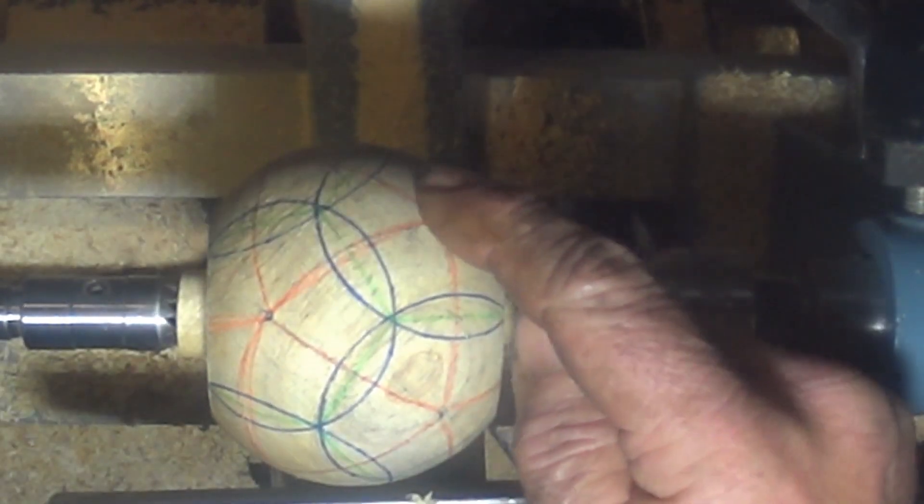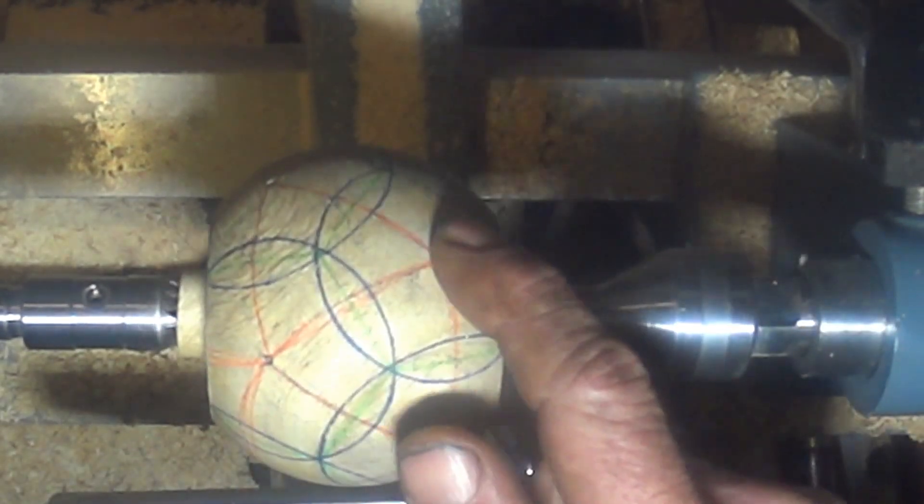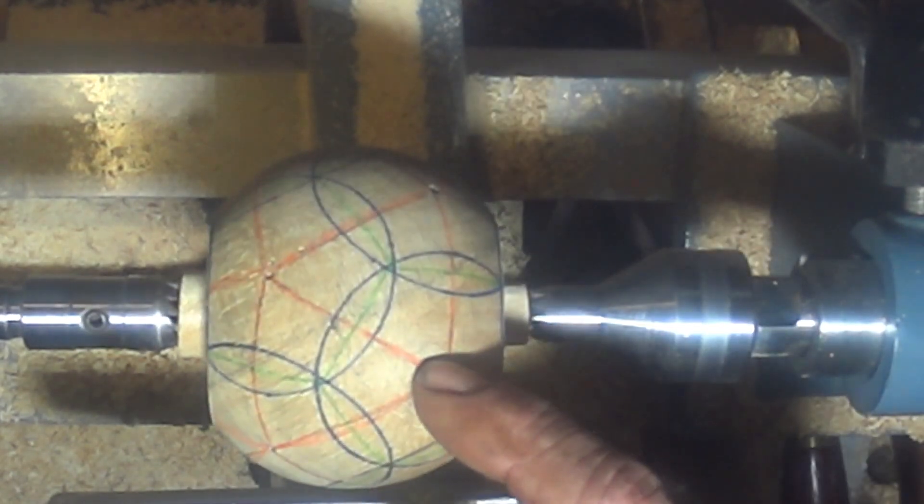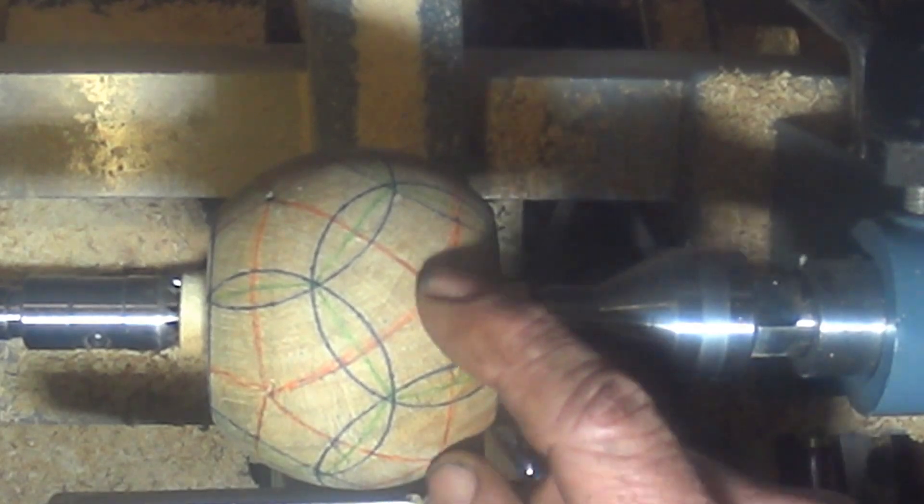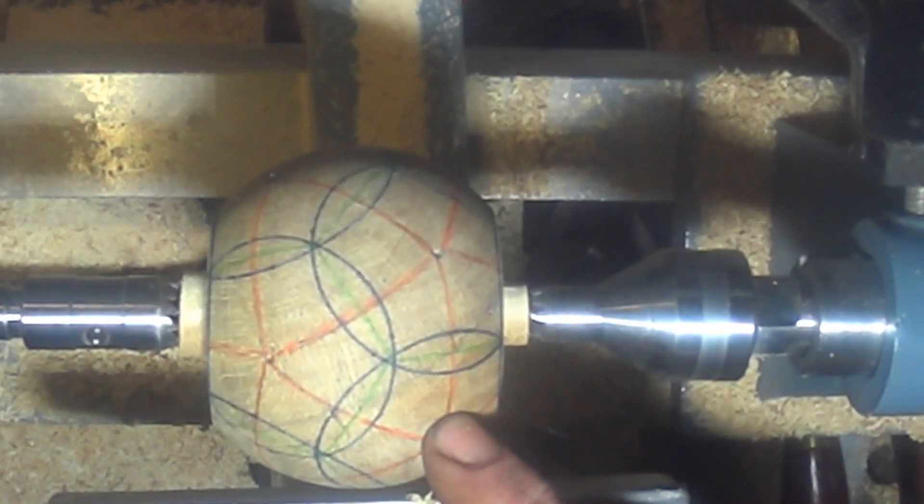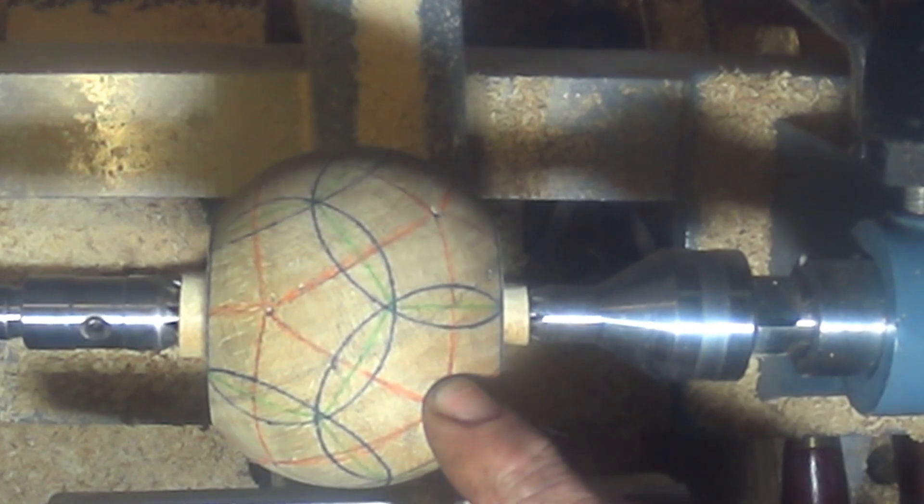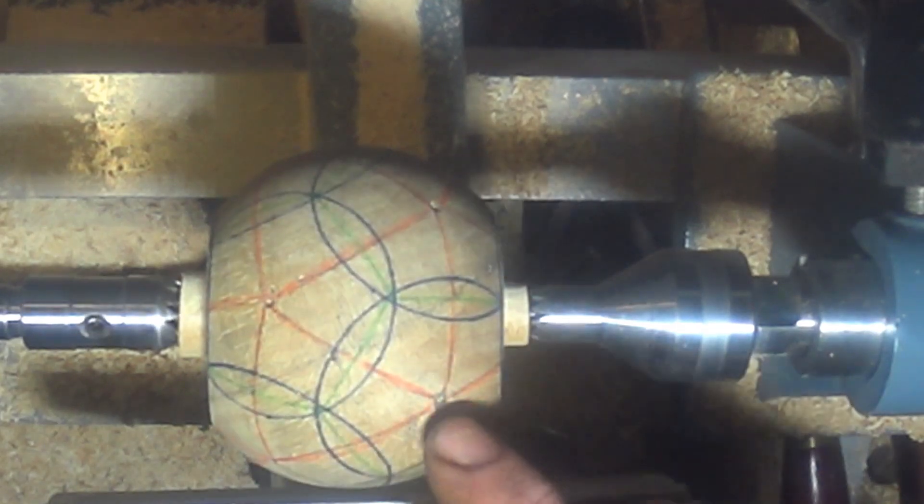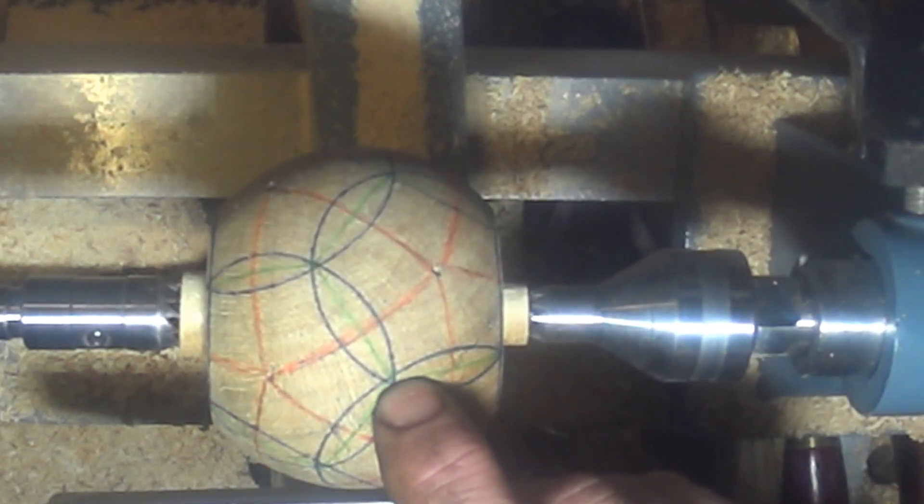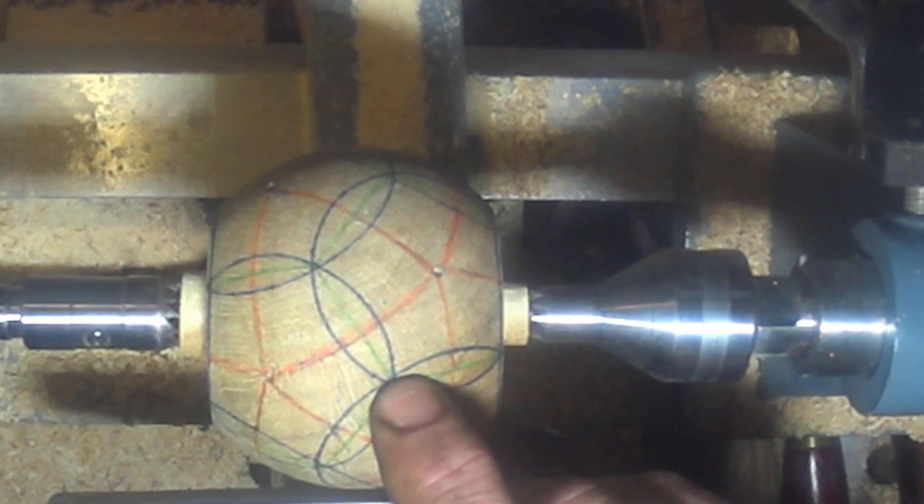oh right I'm marking out, I've marked out the 12 dodecahedron points then I've joined up them all with the neighbours to create the triangles, 20 triangles so a spherical icosahedron and then using a compass I've found the intersection point, the centre of those triangles.